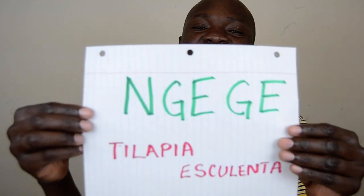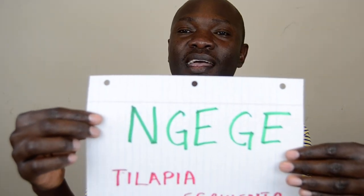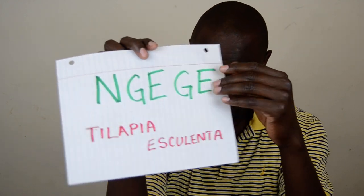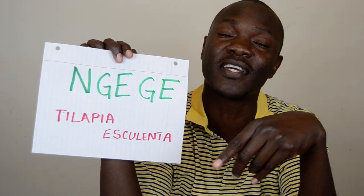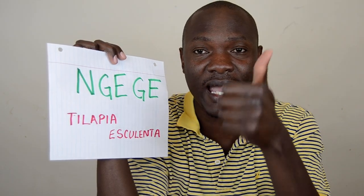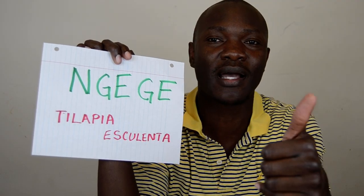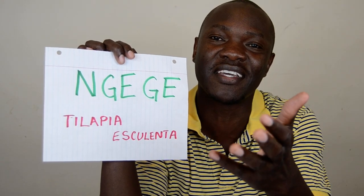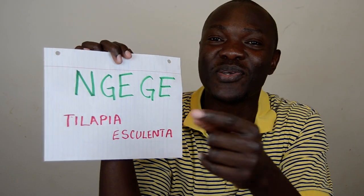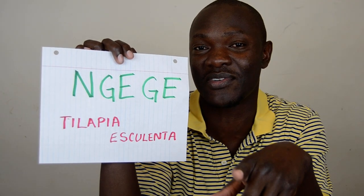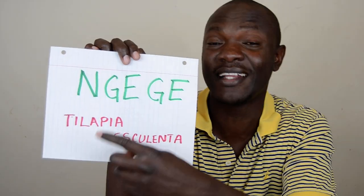The most common type of fish in the Luo region is this fish here — it's called Ngege. Ngege is the tilapia. I have put in the scientific names so you can follow along. I did not find copyright-free images of the fish, so you can search these terms in Google Images to see the type of fish. This is tilapia — tilapia esculenta — and that's Ngege.